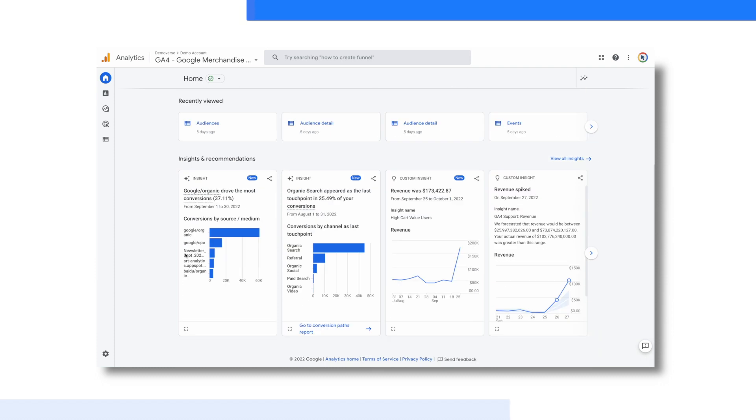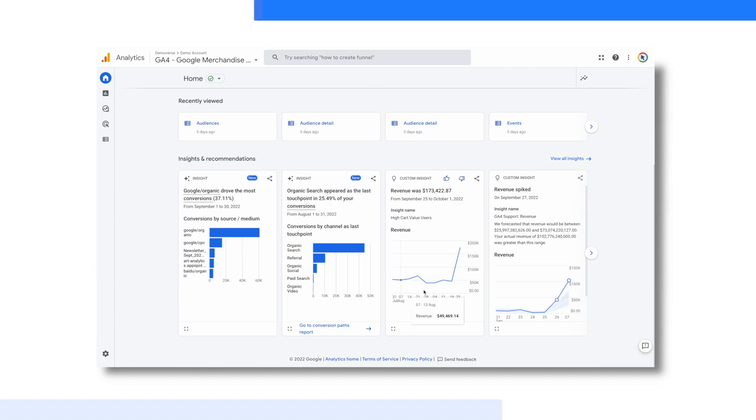For example, you might be presented with new predictive audiences for consideration, or you might be notified of an unexpected spike in metrics that was discovered through anomaly detection. The insights feature in Intelligent Home is a great example of how machine learning is embedded throughout the Google Analytics 4 experience. Lastly, if you have a question in mind, you can always use the search bar to get quick answers.